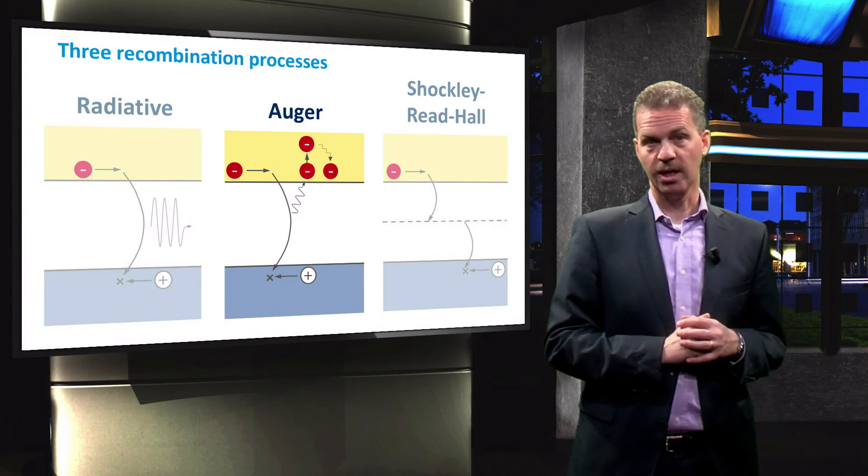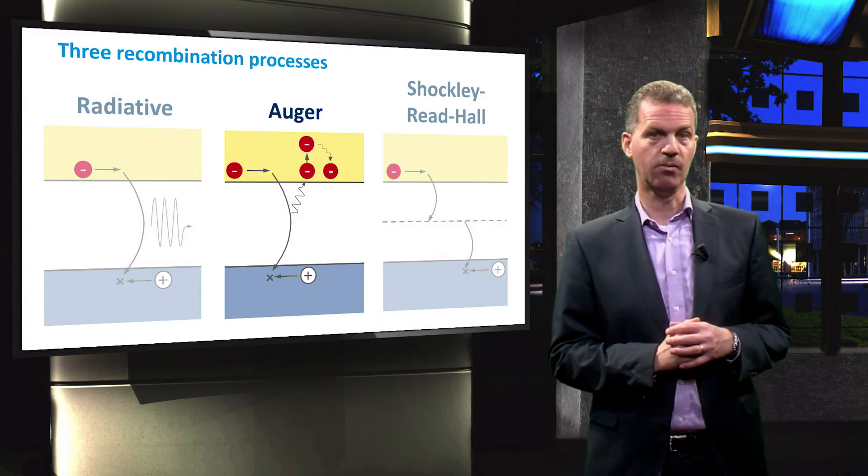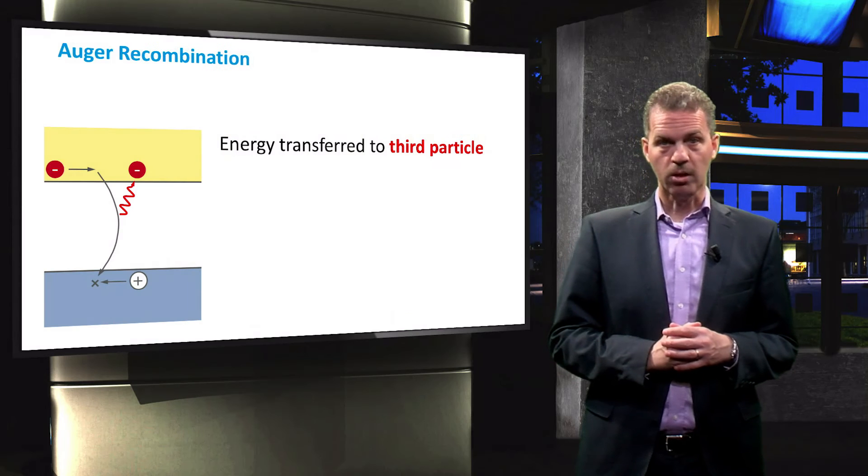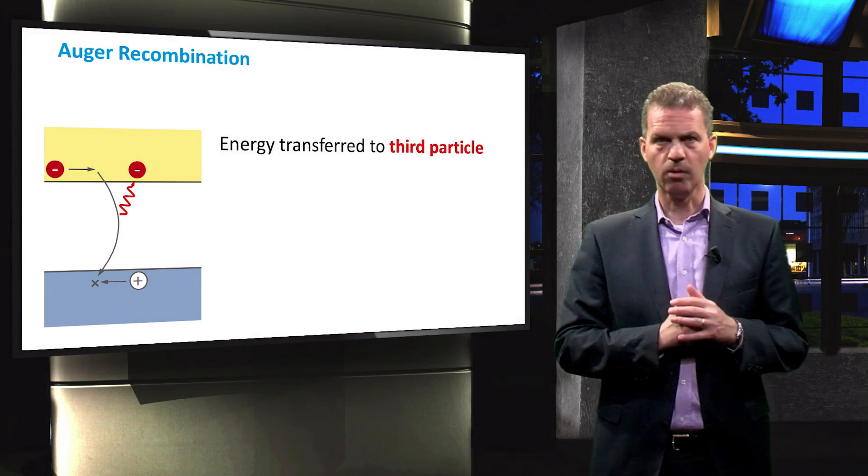The next process through which excited charge carriers can recombine is Auger recombination. Auger recombination is a three-particle process.